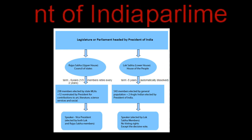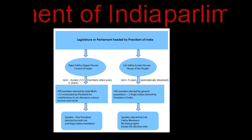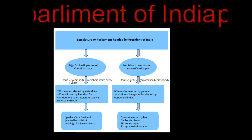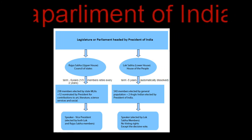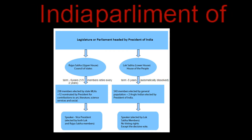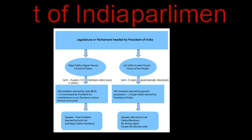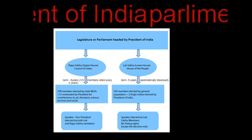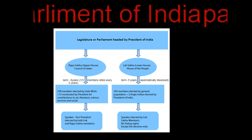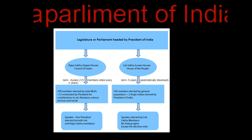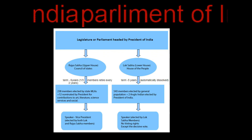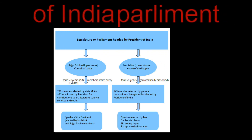The second one is the lower house. The lower house is called Lok Sabha, or popularly called the people's house, because all members of the Lok Sabha are directly elected by the people of India through adult franchise.